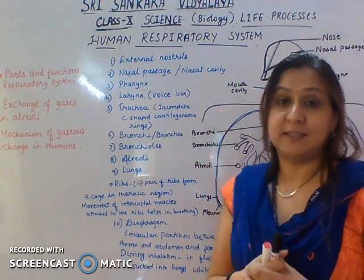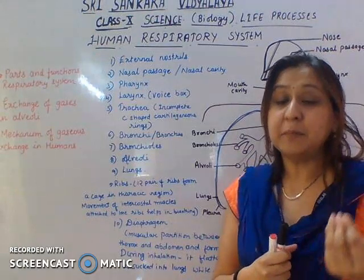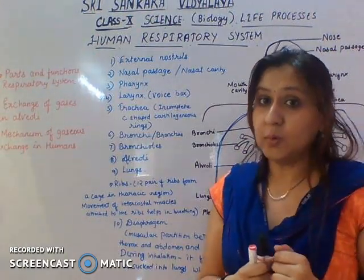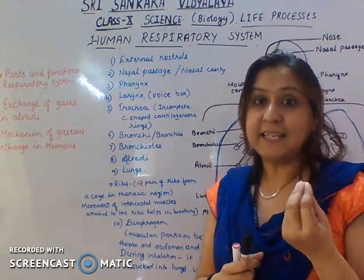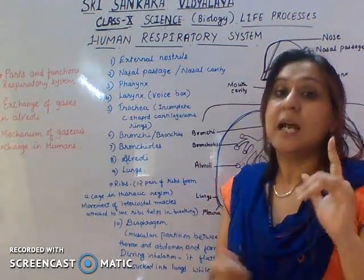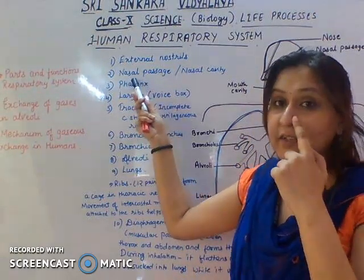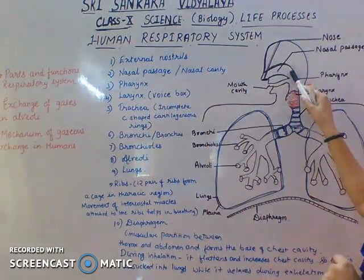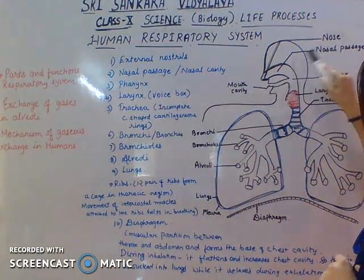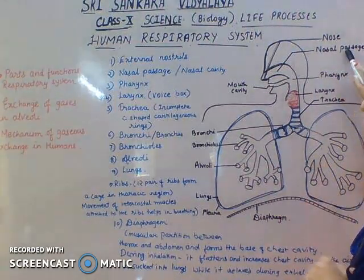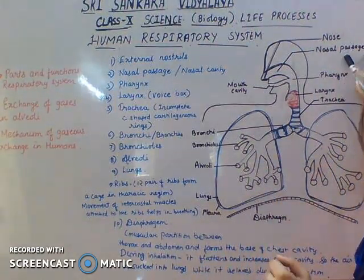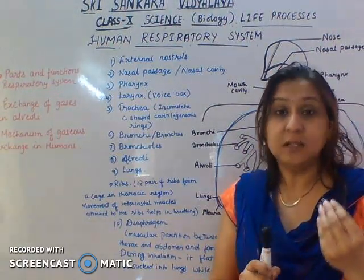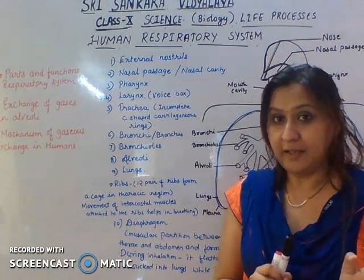First is the external nostrils. External nostrils are the openings present on the tip of your nose through which air enters into your nose. After that, the air reaches the nasal passage, also called the nasal cavity or nasal chamber. Here, hairs and mucus are present which filter the air.